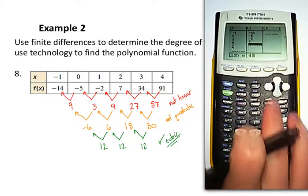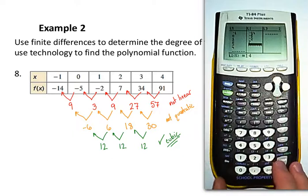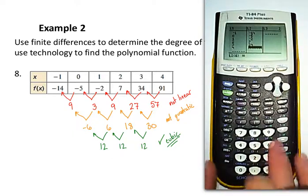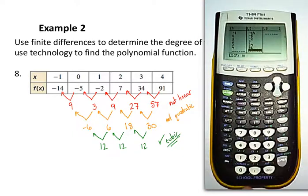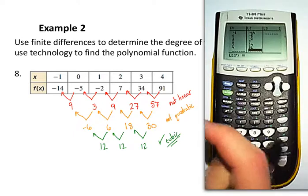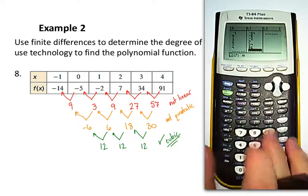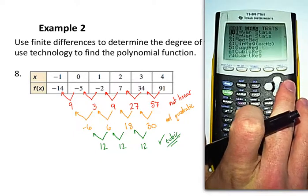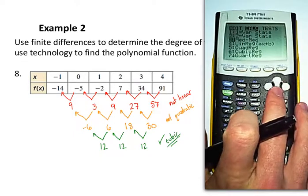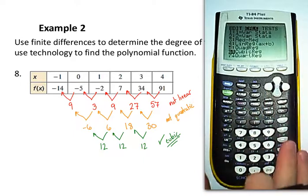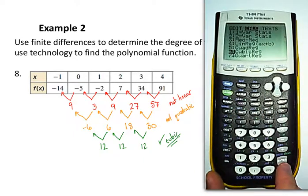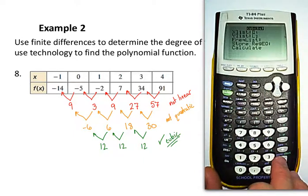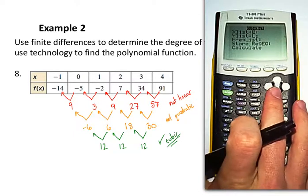Let's enter the matching y values. Negative fourteen, negative five, negative two, seven, thirty-four, and ninety-one. And since we already know what type of regression we're going to use, we're going to be using a cubic regression. We found that out with our finite differences. I'm going to hit the stat key again. It has saved all those values. I'm going to hit the right arrow key over here to calculate. And I'm going to go down to option six. I know it's a cubic function. So we'll use cubic regression. And we'll hit enter.